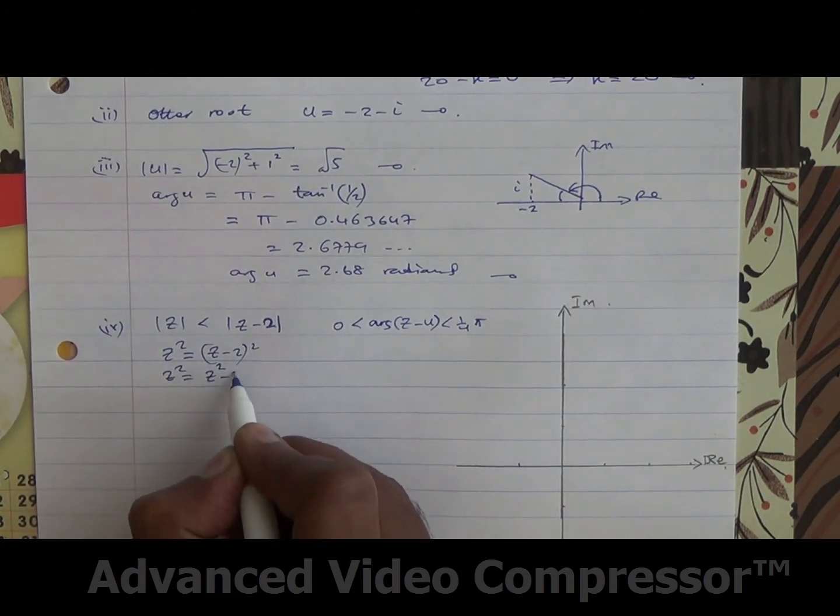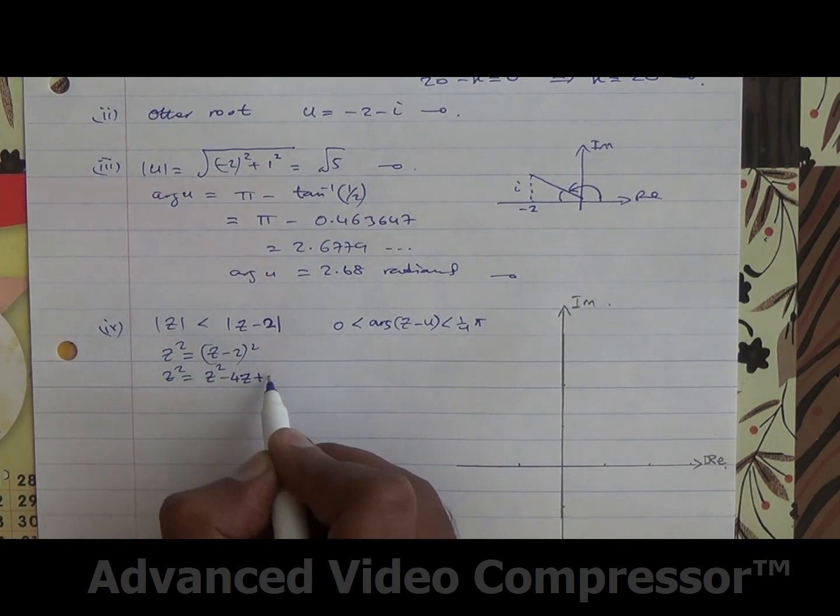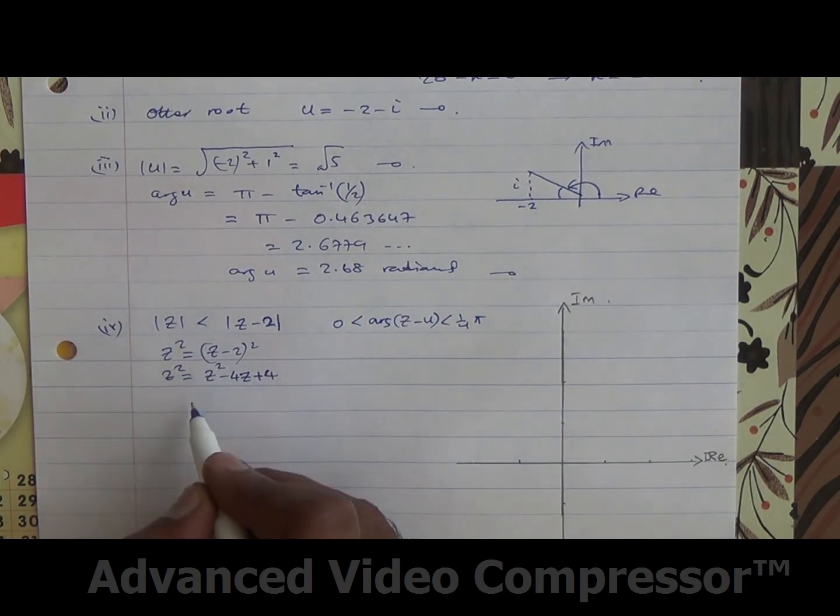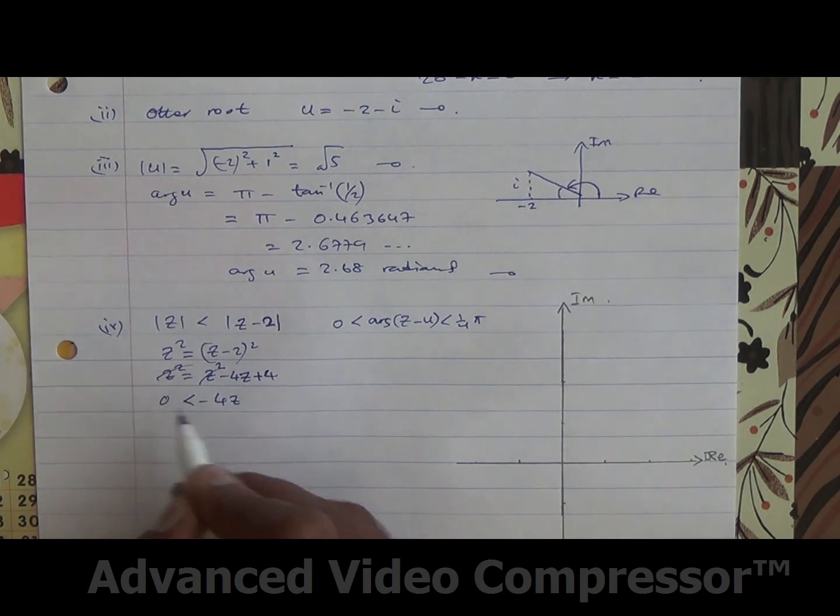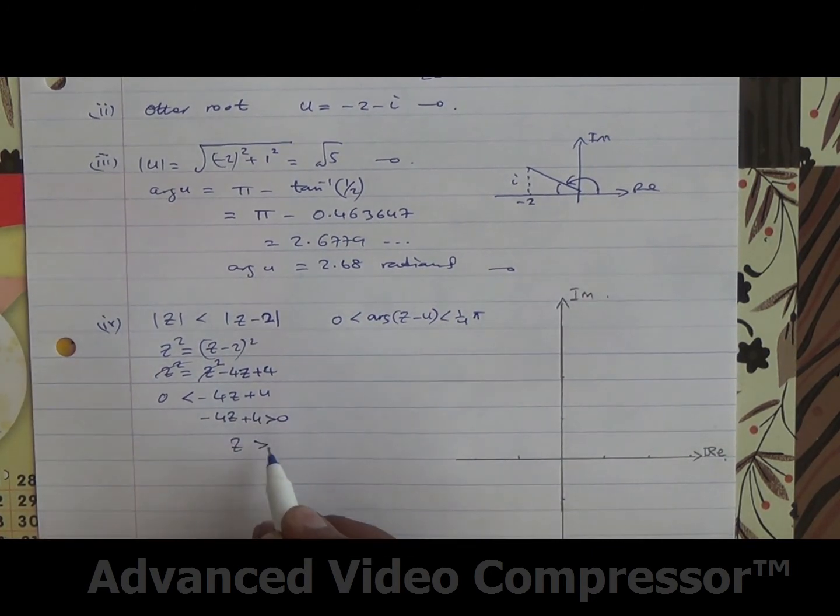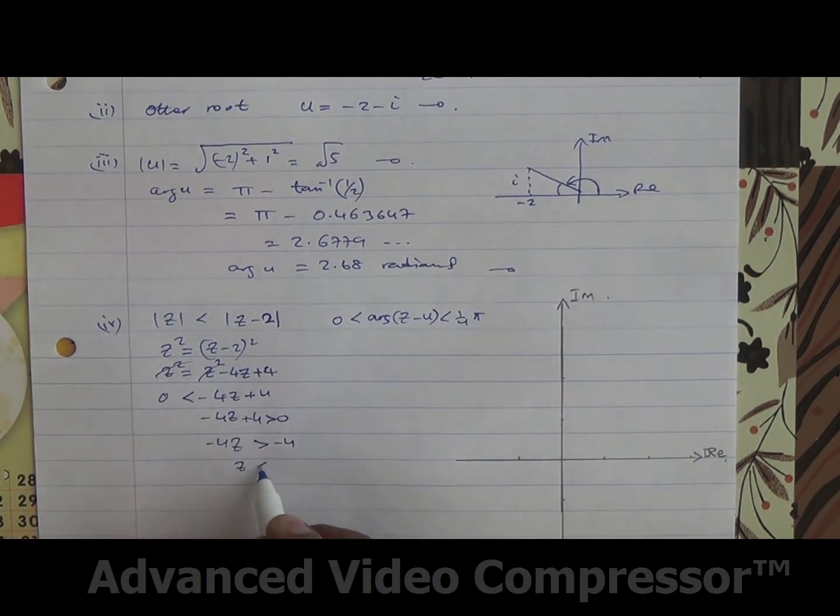And that's going to become 4z plus 4. So this is going to cancel out. And of course, we're going to put the signs, so these two cancel out. And I've got minus 4z, 0 being less than plus 4, and minus 4z, so plus 4 being greater than 0, and z is going to be greater than minus 4, and then z is going to be less than 1.